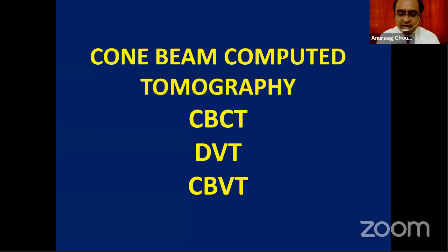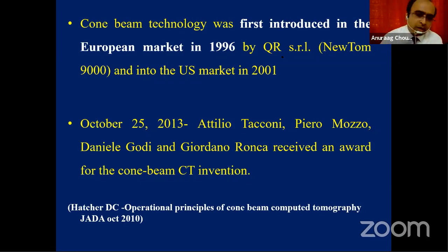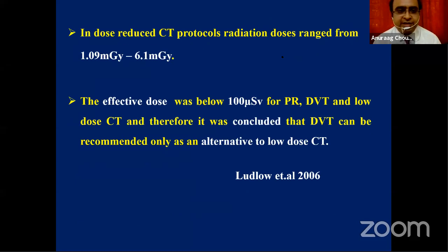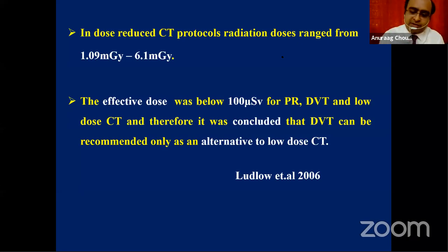CBCT was first introduced in the European market in 1996. Takahashi, Mozzo, and Galdi received recognition, with a Nobel Prize mentioned in 2013 highlighted in the JADA. With respect to radiation dose protocols, it ranges from 1.09 milligrays to 6.1 milligrays with particular software. Using MARS software, the effective dose can be lowered. CBCT delivers 16 to 70 percent lower dose compared to CT scan, and authors have concluded it is an alternative to low-dose CT.